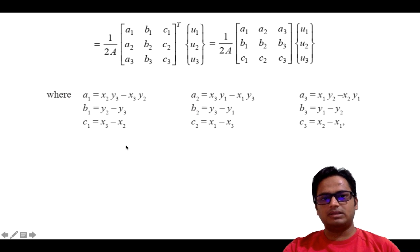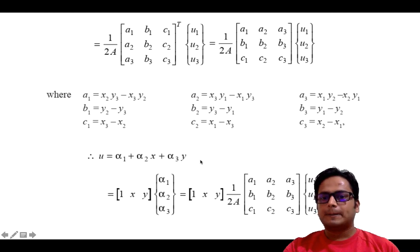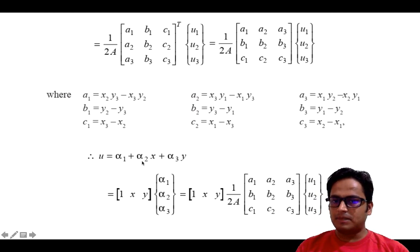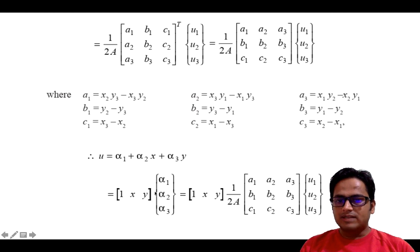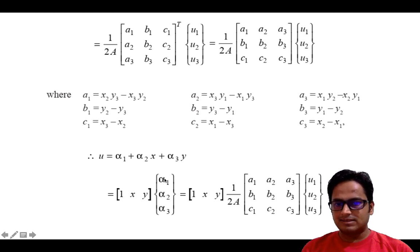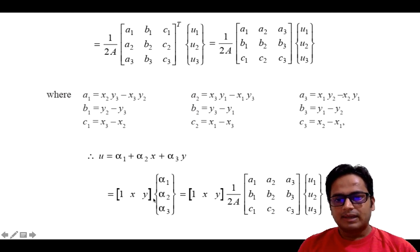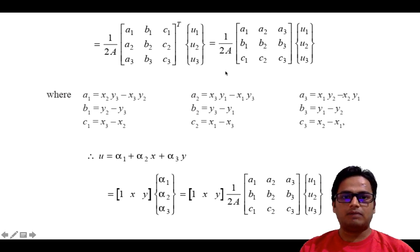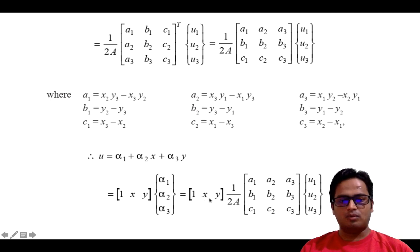From the first slide, U is given by alpha1 plus alpha2·x plus alpha3·y. Writing this in vector form: U equals [1, x, y] multiplied by [alpha1, alpha2, alpha3]ᵀ — a row matrix times a column matrix. When multiplied out: 1·alpha1 plus x·alpha2 plus y·alpha3. We have already obtained the values of alpha1, alpha2, alpha3, so we substitute them here: [1, x, y] times (1/2A) times the matrix of a, b, c values.